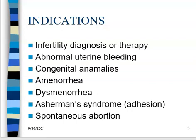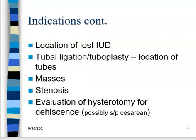Asherman syndrome is where scar tissue builds up inside the uterus after infections, causing adhesions where the walls are stuck together by fibrous tissue. Spontaneous abortion is another word for miscarriage — if somebody is having repeated miscarriages, we want to know if there's something wrong with their uterus that's causing it, so we can fix it or send the patient to surgery.